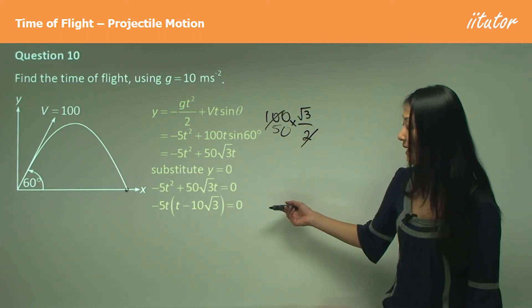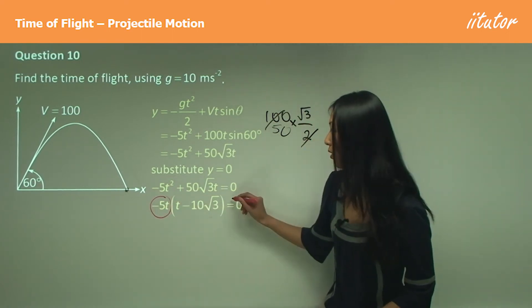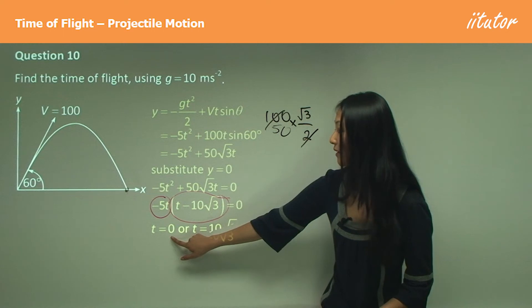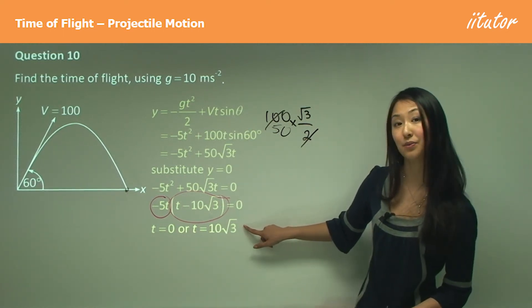From here we can see that either this equals 0 or that equals 0. So we can say t equals 0, or t equals 10√3.